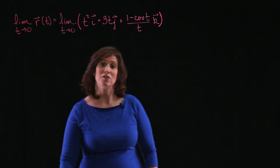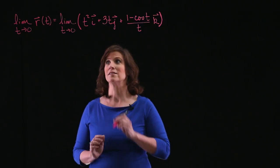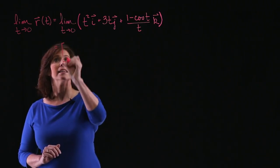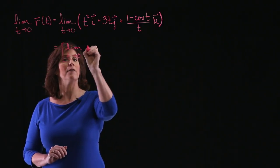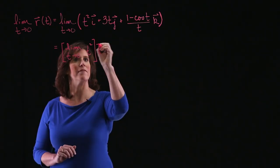Well, when you take the limit of a vector-valued function, you take the limit of each of the individual components. So I can rewrite this limit as the limit as t approaches 0 of t squared, and then take that limit and multiply it by vector i.